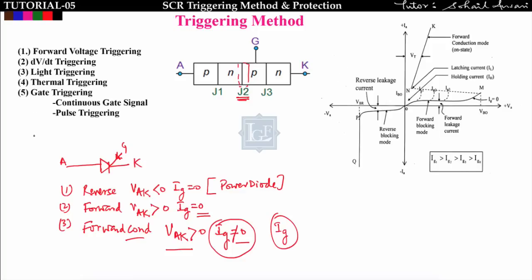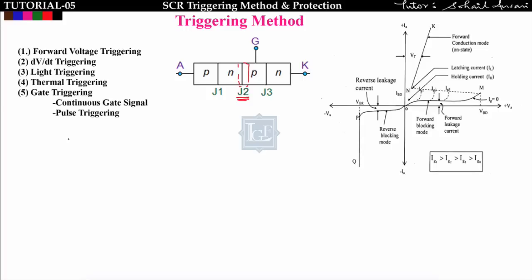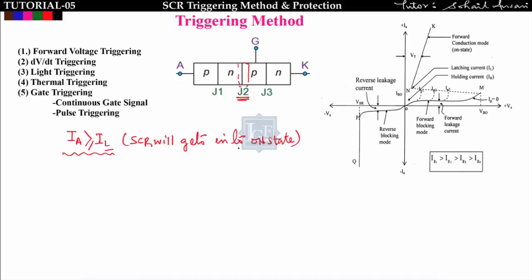In this lecture we will see the turn-on methods of SCR — what methods are available to bring the SCR into the turn-on state. To turn on the SCR, we have to make anode current greater than or equal to the latching current. Latching current is the minimum amount of anode current required to turn on the SCR. There are five ways to achieve this.